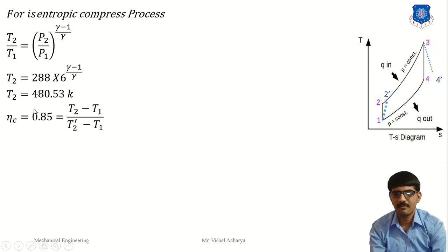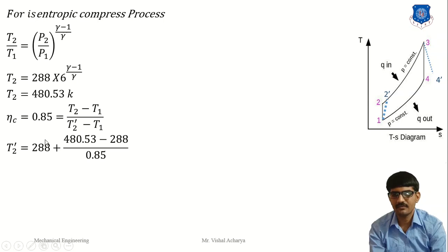For compressor efficiency, given as 0.85, the formula is: compressor efficiency = (T2 - T1) / (T2_dash - T1). We have T2 and T1, so we solve for T2_dash. T2_dash = T1 + (T2 - T1) / efficiency = 288 + (480.53 - 288) / 0.85. Therefore, T2_dash = 514.5 K.